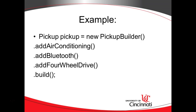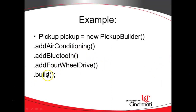Notice the final method, which is Build. That says I have all the options selected that I want, and now I want my Pickup Builder to create a new pickup. Each of the methods — Add Air Conditioning, Add Bluetooth, Add 4-Wheel Drive, and Build — are all methods defined on the Pickup Builder class. The Build method is going to take the information collected by choosing which Add methods we invoked, and the return type of this Build method is a Pickup.